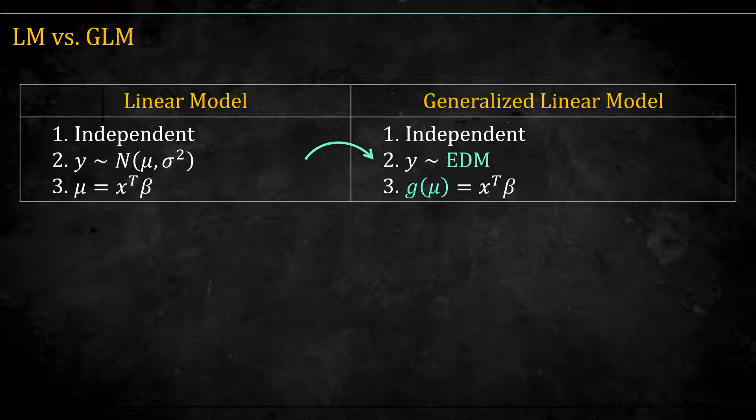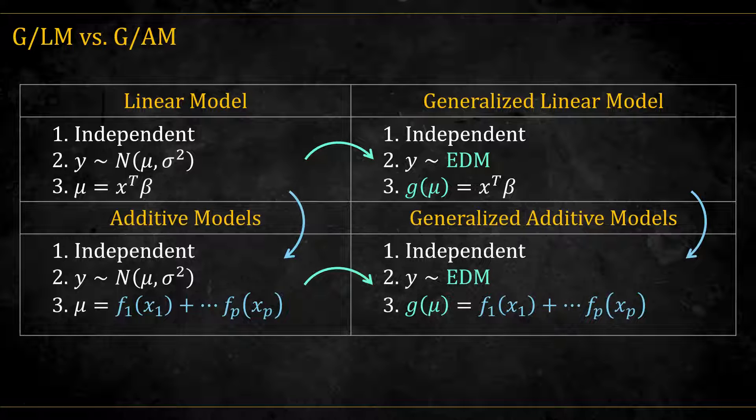So, if we go back to this table, we have here the LMs and GLMs, and now we can move to additive models and GAMs. We see the only difference is in the way the x predictors relate to the mean or to the link function of the mean. You can pause this video to have some better look.